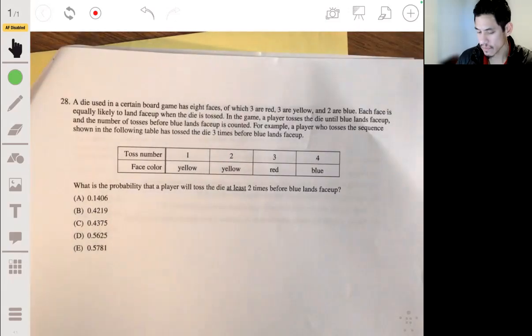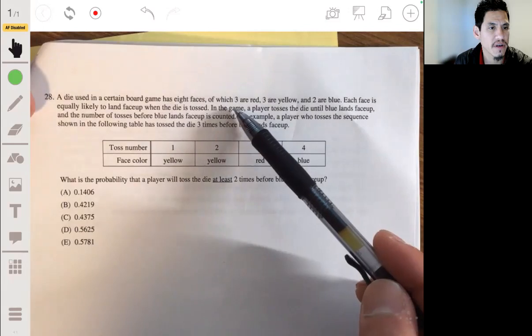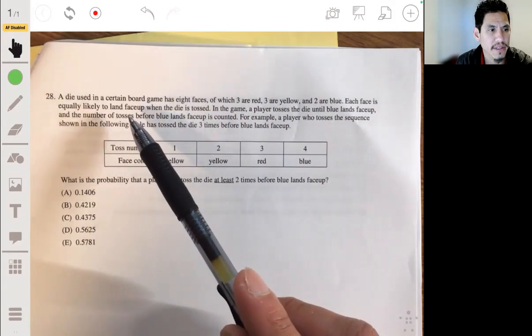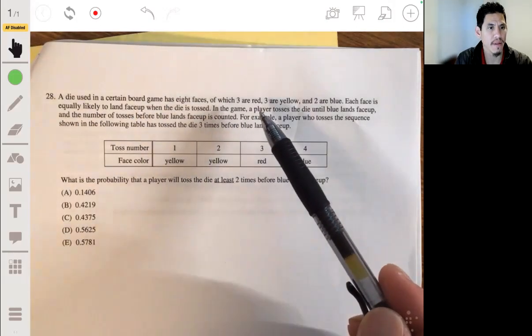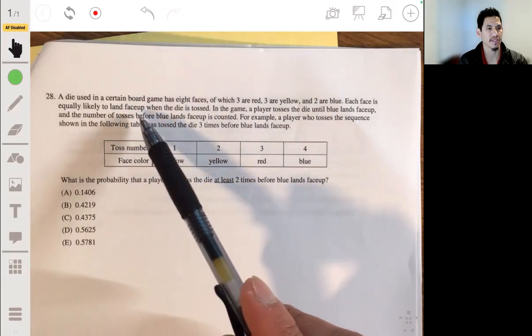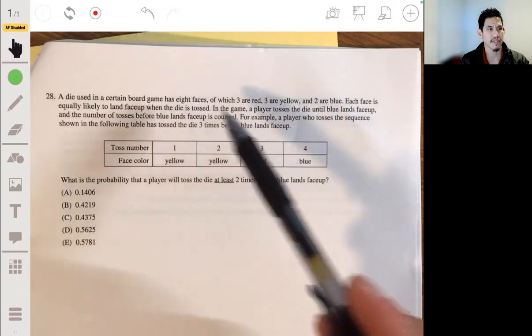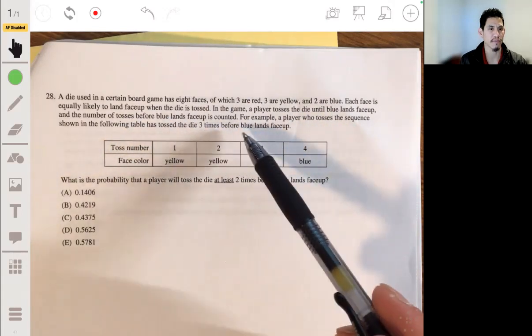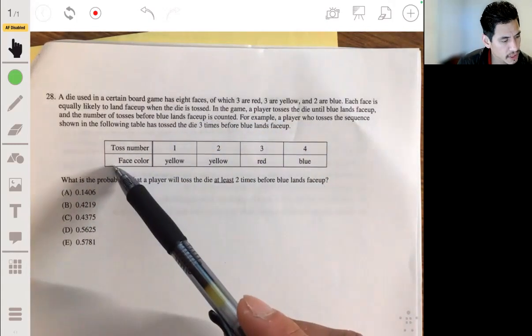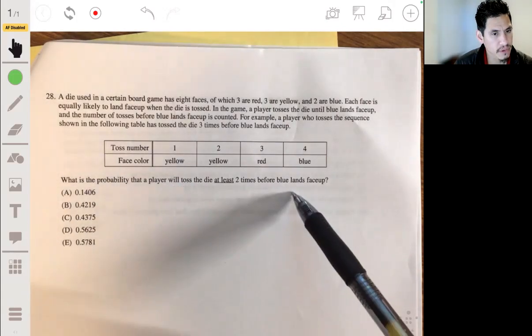28, probability. Alright, a die used in a certain board game has eight faces of which three are red, three are yellow, and two are blue. Each face is equally likely to land face up when the die is tossed. In the game, a player tosses the die until blue lands face up and the number of tosses before blue lands face up. For example, the player who tosses the sequence shown in the following table has tossed the die three times before the blue lands face up. So we want to find the probability that the player will toss the die at least two times before blue lands face up.